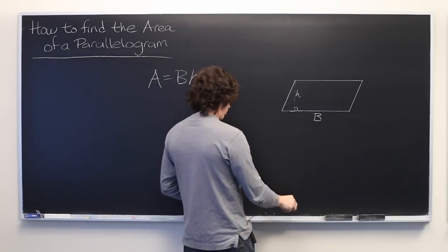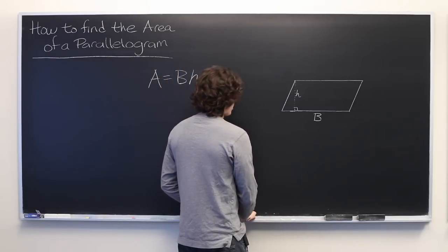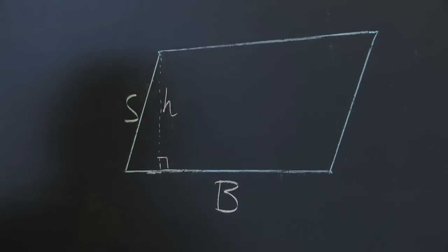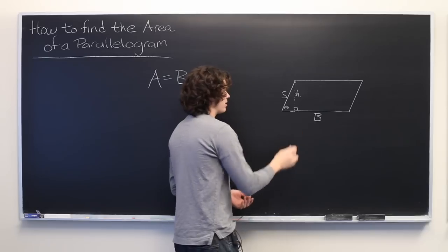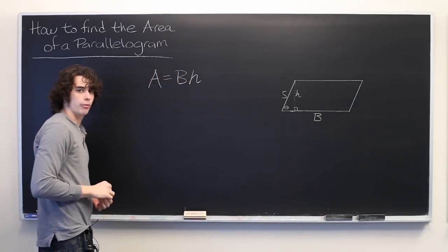Let's say, for example, that we are given the length of this side, and also perhaps the angle in between this side and the base. That's enough information to determine the height.